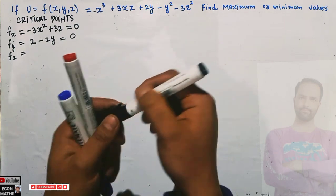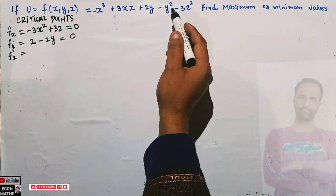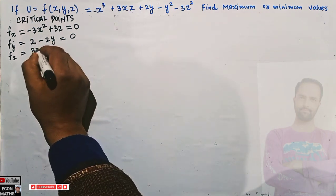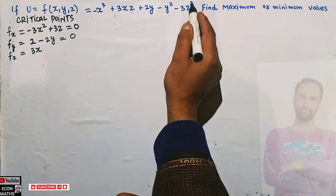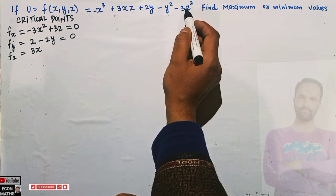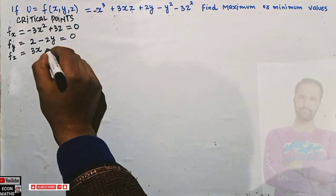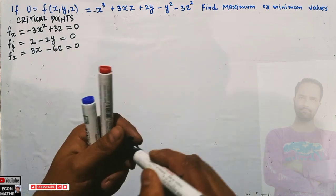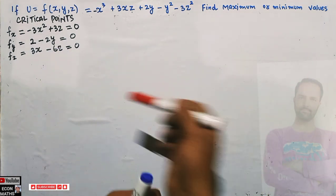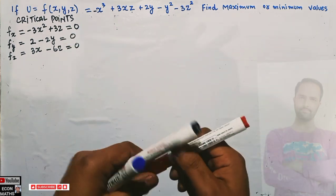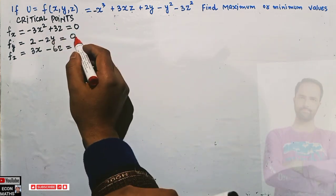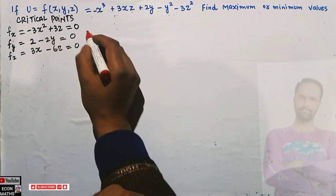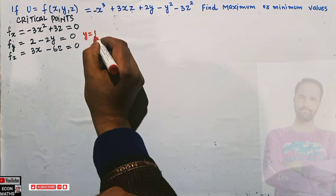Setting f_z = 0: the derivative of 3xz with respect to z gives 3x, and the derivative of -3z² gives -6z, so 3x - 6z = 0. From f_y = 0, we get 2 - 2y = 0, which gives y = 1. So our first critical point value is y = 1.